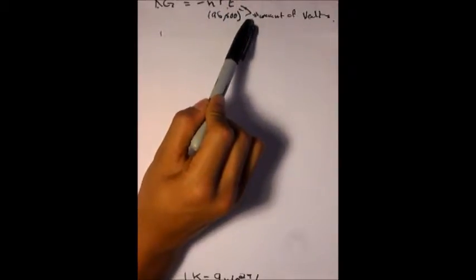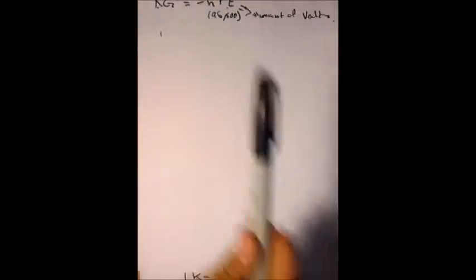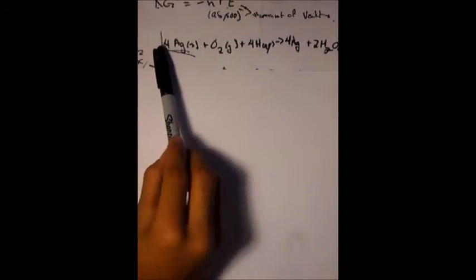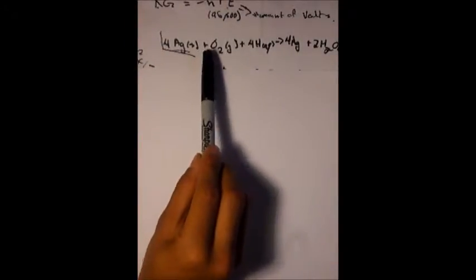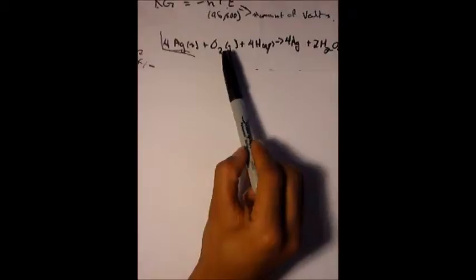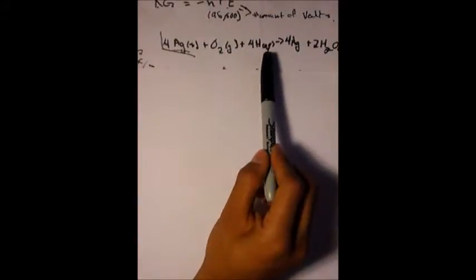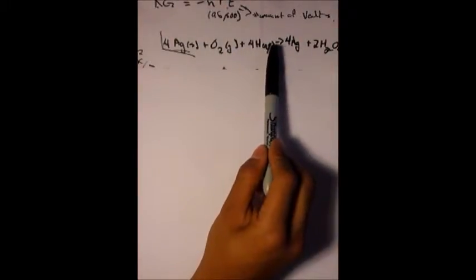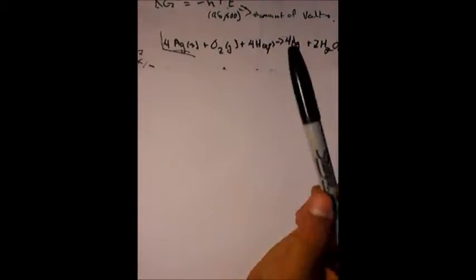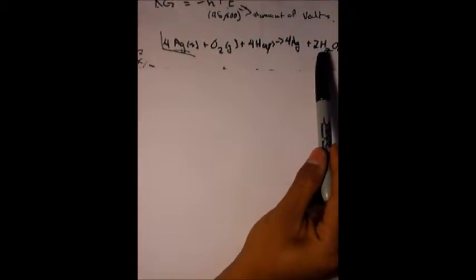Delta G equals the number of electrons moles times F, which is 96,500, times E. E is the amount of volts from a reaction. First we get the equation which is given: 4Ag+ + O2 gas + 4H+ aqueous going to 4Ag plus 2H2O.